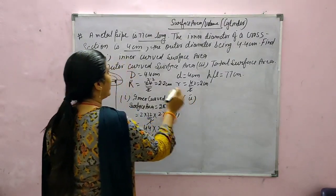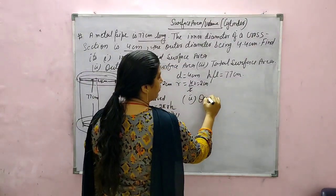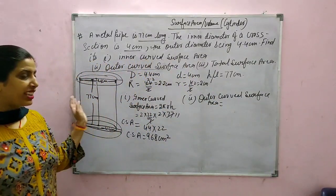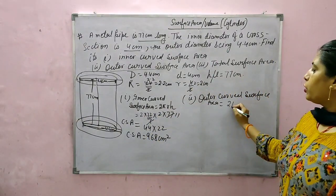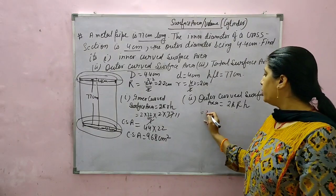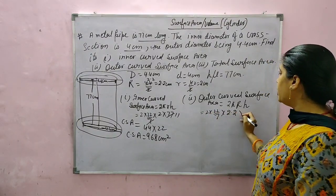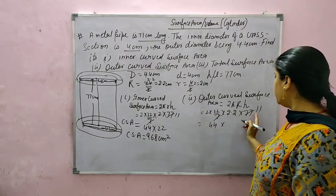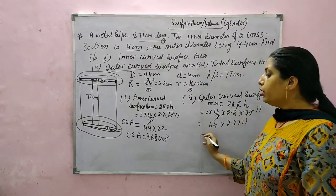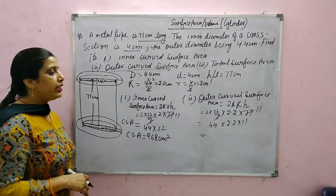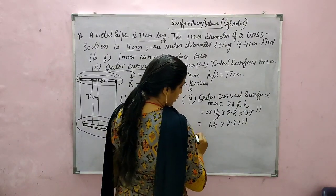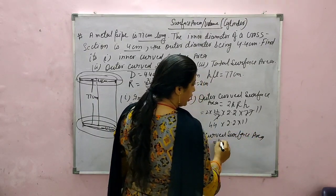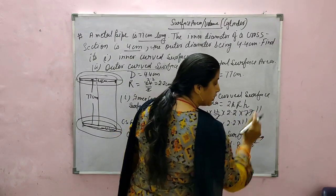Second part: outer curved surface area. For outer, we use external radius. Outer CSA equals 2 pi capital R h, which is 2 into 22 by 7 into 2.2 into 77. This becomes 44 into 2.2 into 11. After multiplying these values, outer curved surface area equals 1064.8 cm square.